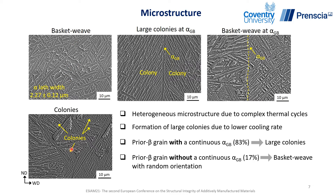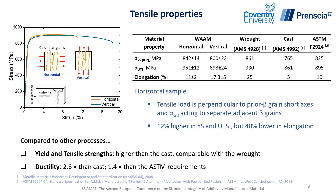Higher magnification images of the microstructure are shown here. These builds consist of either basket weave microstructure or colony microstructure, which is formed due to lower cooling rates. Some of the prior beta grains have a continuous grain boundary alpha, where a large colony microstructure is decorated on either side. However, there are some prior beta grains where we did not observe a continuous grain boundary alpha, and we have seen that basket weave microstructure is decorated on either side.